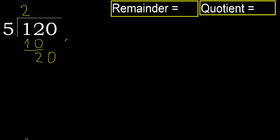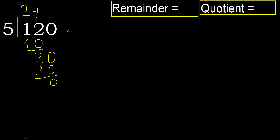20. 5 multiplied by 5 is 25, which is greater. 5 multiplied by 4 is 20, which is not greater. 20 minus 20 equals 0. Next.